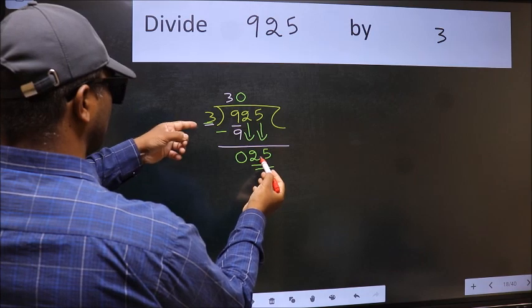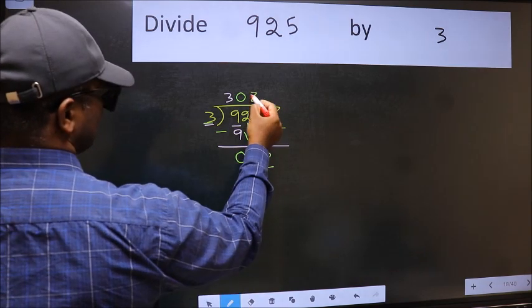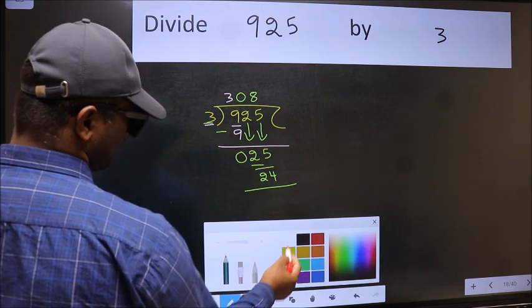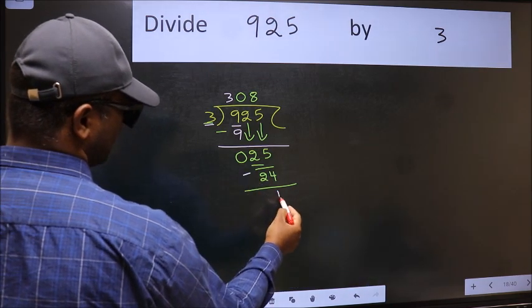A number close to 25 in the 3 table is 3 times 8 is 24. Now we should subtract. We get 1.